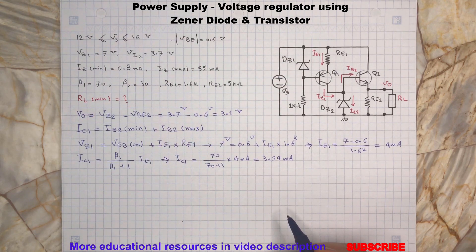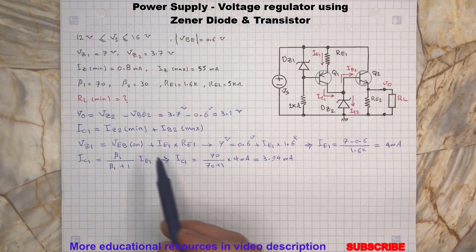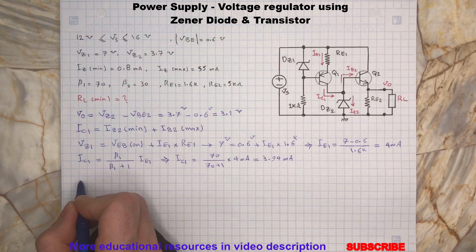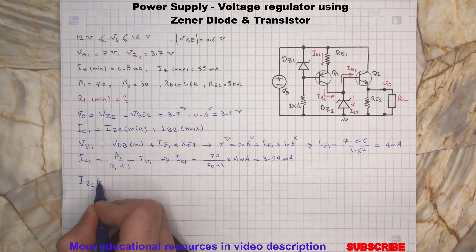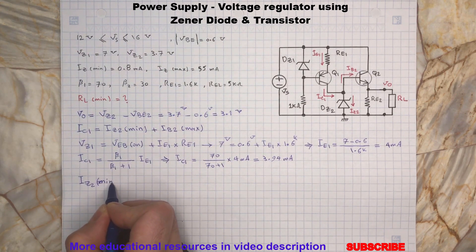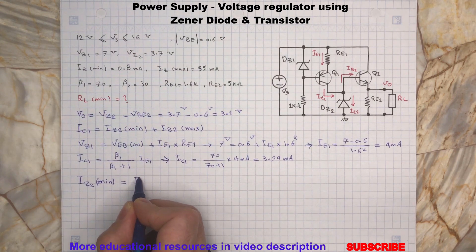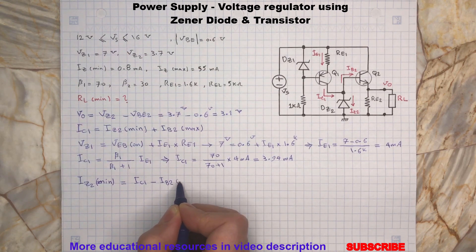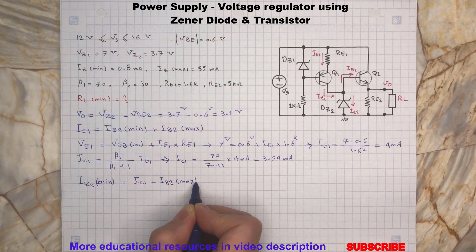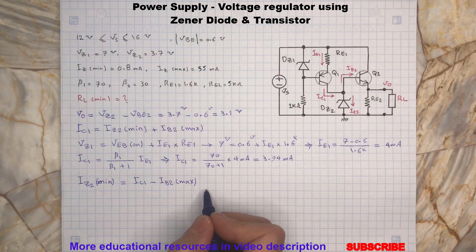Back to the video. And now we are going to find the value of IB2 max when we have the minimum value for the load resistance RL. Let's rewrite this equation again.